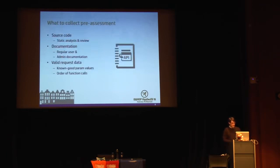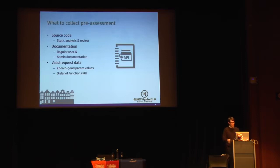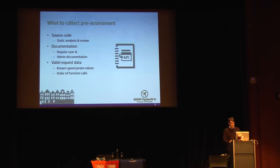A few things to collect: source code and documentation. From your customers, acquire known good requests — know what values the APIs are expecting and how to make valid requests to your web services and back-end systems. API testing is hard simply because testers don't know how to make proper calls; they don't know the order of operations or the specific parameter values the back-end system expects. You can gather this through runtime traffic analysis, using the application and capturing traffic, and from documentation and customers directly.